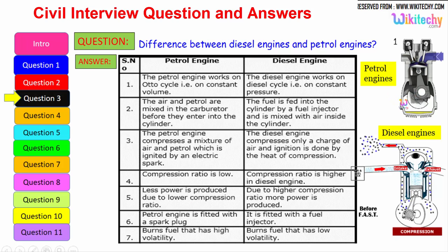Here the compression ratio is low whereas the compression ratio is higher. Less power is produced due to lower compression ratio. Higher compression ratio, more power is produced. Petrol engine is fitted with a spark plug. It is fitted with a fuel injector. So it burns the fuel with high volatility. So the petrol is highly volatile whereas here it burns the low volatility liquid also. So diesel is a low volatile liquid. These are all some of the differences between the petrol engine and diesel engine.